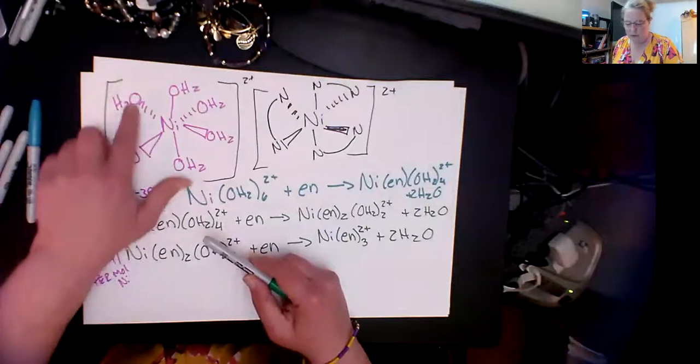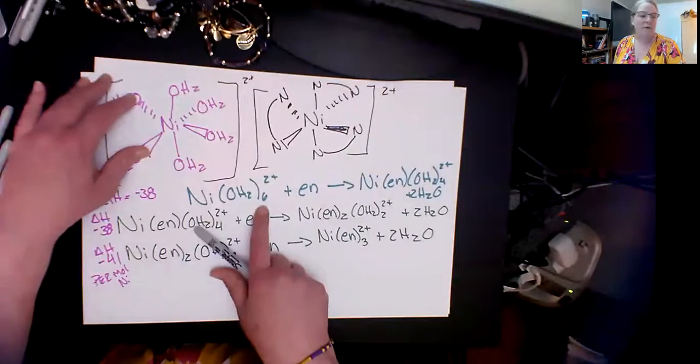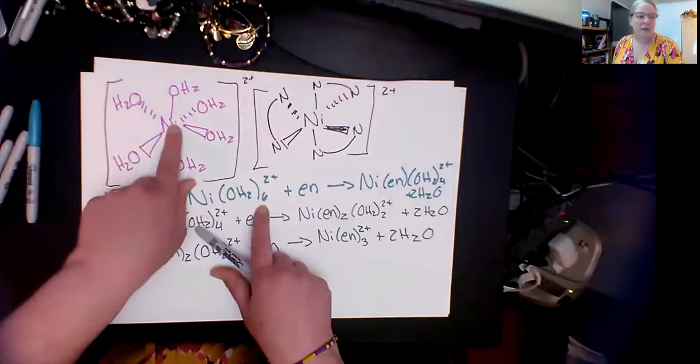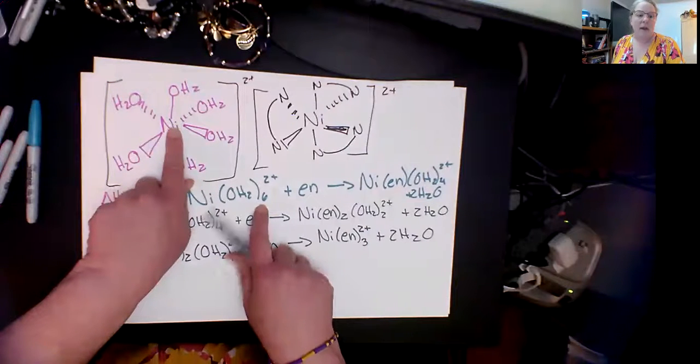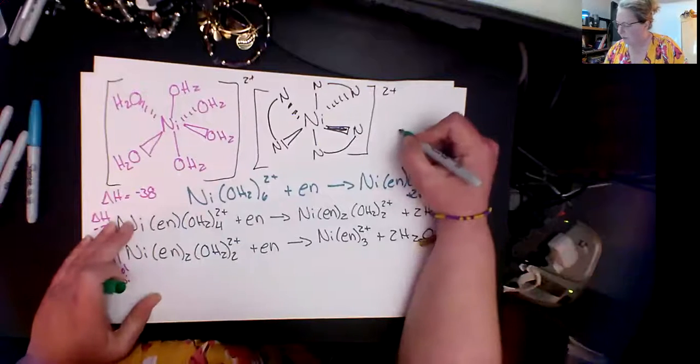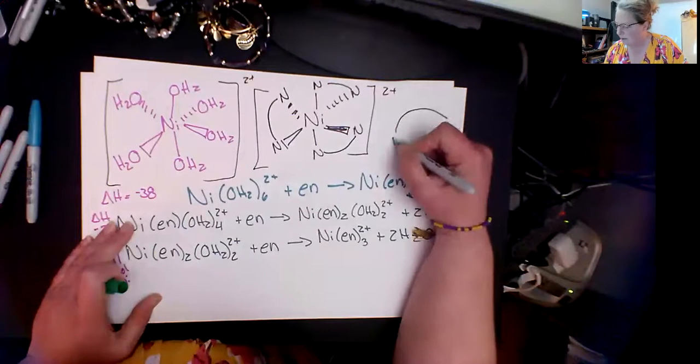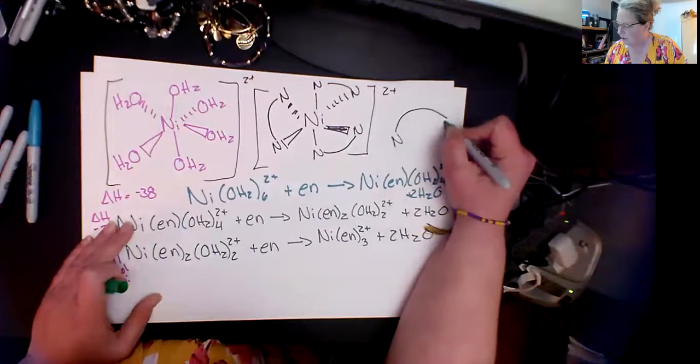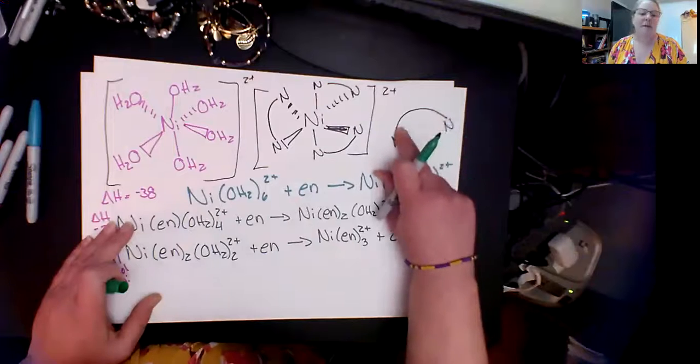What you're working with is this little nickel complex and the nickel's got all of these waters surrounding it. We have six waters surrounding the nickel center and this en thing - it's a nitrogen, that's a nitrogen, and then this is a carbon chain.